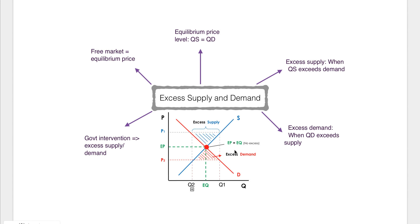You might also need to know examples of excess supply and demand in markets, in case you get a case study on the exam. For example, if there's a drought, there are going to be way fewer strawberries. The quantity demanded — people still really want strawberries — is going to be way above the amount supplied. So that's an example of excess demand caused by a drought.